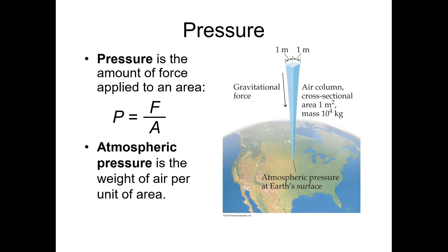Pressure is defined as force per unit area. In the English system, tire pressure is expressed as pounds per square inch — pounds being a unit of force and square inch a unit of area. Atmospheric pressure is essentially the weight of a column of air on a particular area on the Earth's surface.